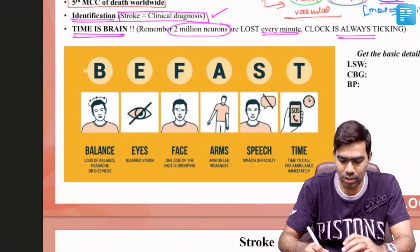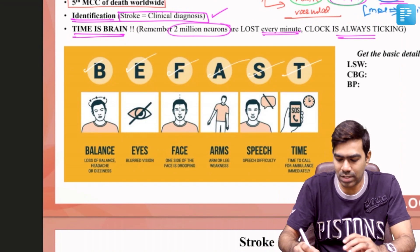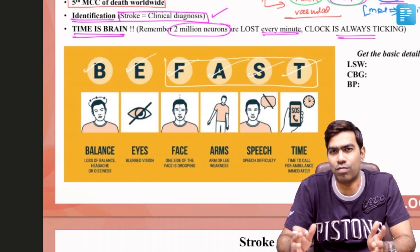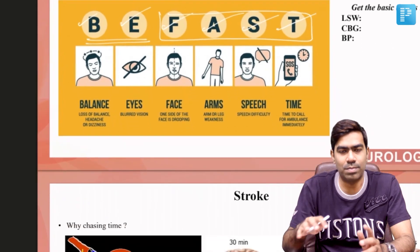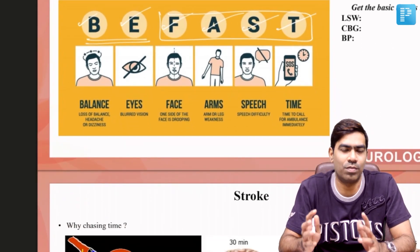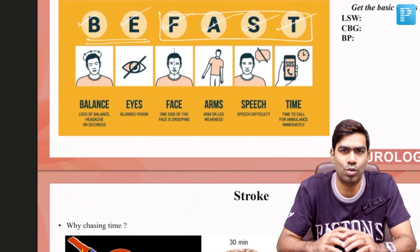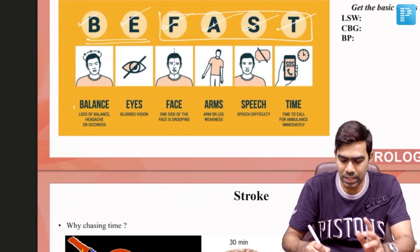That is why we have the famous acronym for identification of stroke: BE-FAST. Previously it was only FAST, but this missed a lot of posterior circulation strokes. That is why the two letters B and E were added, to include signs and symptoms of posterior circulation stroke as well.